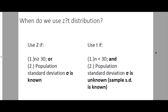When do we use the Z or the T-distribution? We use Z if our sample size is greater than or equal to 30, or the population standard deviation or population variance is known. Because if the population variance is known, then automatically the population standard deviation is known, and vice versa.